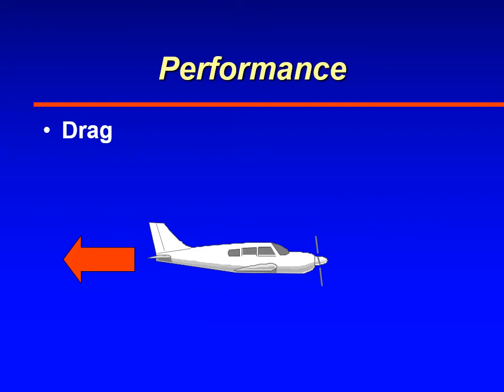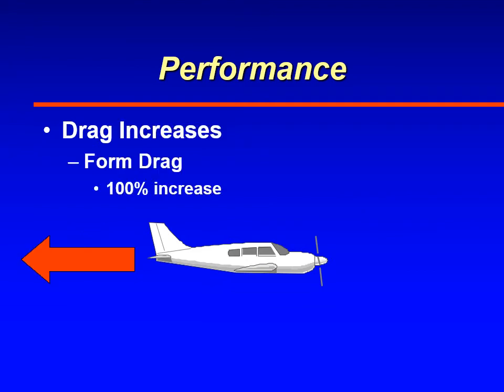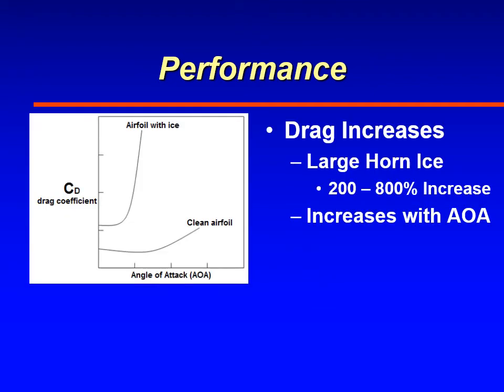What they saw was a large increase in drag — specifically form drag — and they found that form drag can increase up to 100 percent. This is the biggest change among the four forces that act on an aircraft in flight; drag changes the most. The biggest change in drag occurred when the aircraft was carrying large horn ice, which forms in glaze or clear ice conditions with super-cooled large drops. They found that drag can increase an astronomical amount — between 200 and 800 percent — and that also increases with angle of attack, as the coefficient of drag increases significantly.